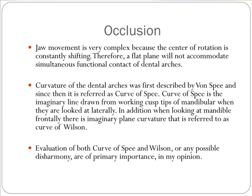In my opinion, an overall evaluation of the curve of Spee and the curve of Wilson for any possible disharmony should be the first step. The next important step in evaluation of occlusion should be the evaluation of the relationship, size, and position of teeth relative to each other.